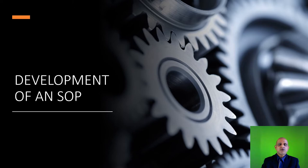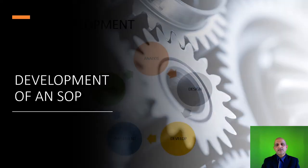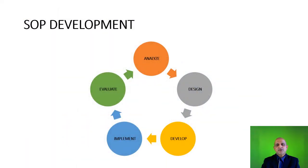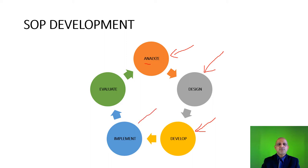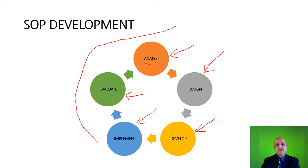Let us now move on to the process of development of an SOP. The process depends on analysis: we first analyze a specific procedure, design a set of steps around that procedure, develop these steps and translate them into a document, implement these steps at the laboratory level, and evaluate the procedure for effectiveness and consistency of operation. This is the basic procedure for SOP development.